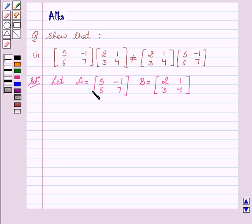Let A be the matrix [5, -1; 6, 7] and B be the matrix [2, 1; 3, 4]. We have to show that AB is not equal to BA. So, first of all we will take the LHS.